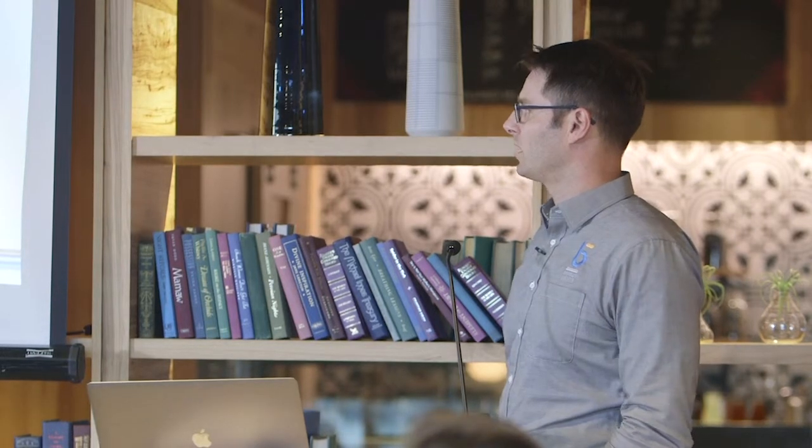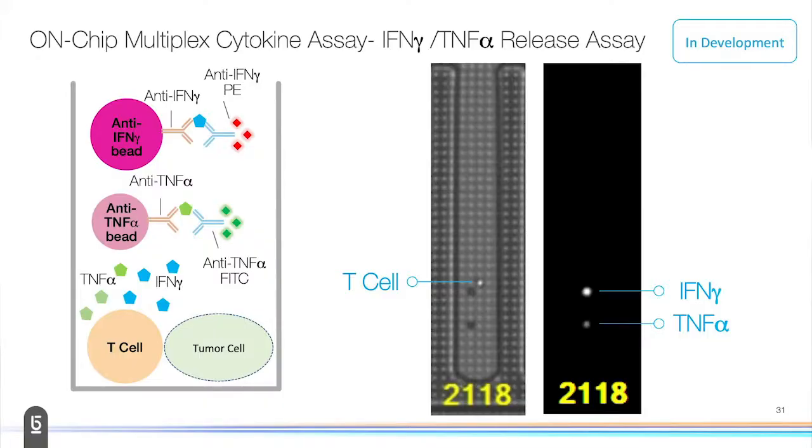This is kind of where we're starting this summer with the first application. Things we're working on now: well, now let's get really crazy and put four different things together. Now we're doing a TNF bead as well. We can look at basically whether these cells are secreting interferon and TNF. We have actually done three different cytokines in the same run as well.